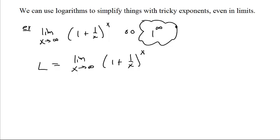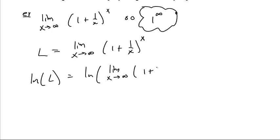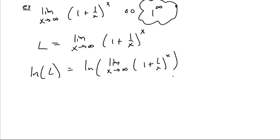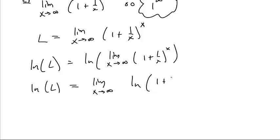Suppose it has a limit. If it has a limit, then we can take the natural log of both sides. The natural log of L is going to be the natural log of the limit as x goes to infinity of one plus one over x to the x power. The logarithm of a limit is equal to the limit of the logarithm, so this is the limit as x goes to infinity of the natural log of one plus one over x all to the x power.